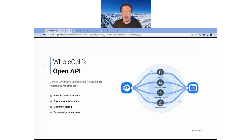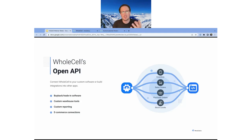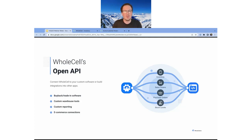Examples include folks building buyback or trade-in portals — you can connect those to create purchase orders and incoming inventory. If you have custom warehouse or reporting tools, or scanners in the warehouse scanning devices in bulk, you could build a mobile app or application for that use case. And for e-commerce connections, you can use our stock levels API to connect any custom e-commerce website or sales portal to wholesale — to display current inventory for sale and bring in offers or orders from your customers.